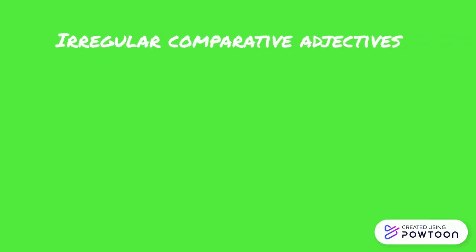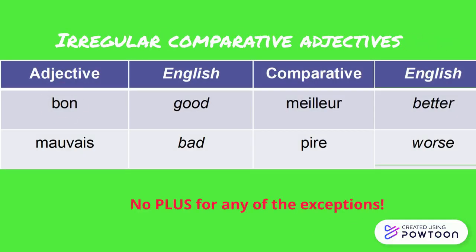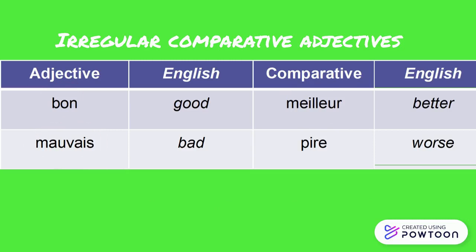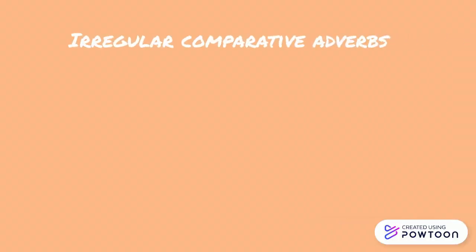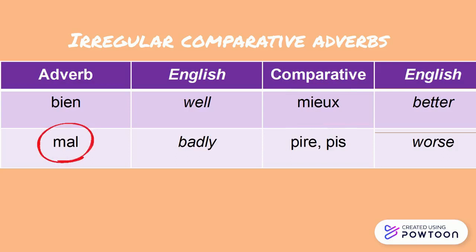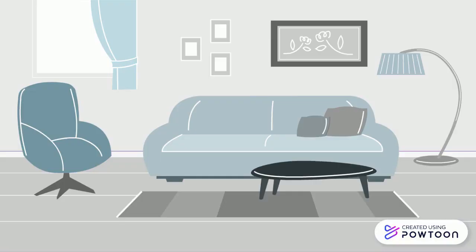There are two irregular comparative adjectives. 'Bon' (good) — the comparative is 'meilleur' (better). And 'mauvais' (bad) — the comparative is 'pire' (worse). There are also two irregular comparative adverbs. 'Bien' (well) — the comparative is 'mieux' (better). And 'mal' (badly) — the comparative is 'pire' or 'plus mal' (worse).